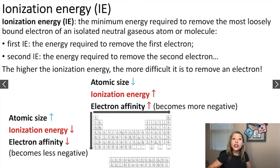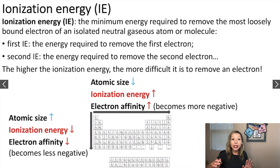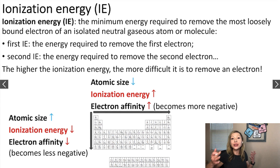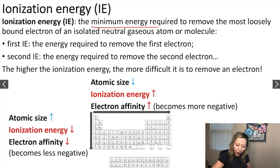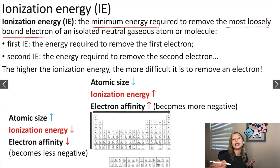If you watched my previous video, you already know what ionization energy is. But let's refresh our memories. This is the minimum energy required to remove the most loosely bound electron of an isolated neutral gaseous atom or molecule.